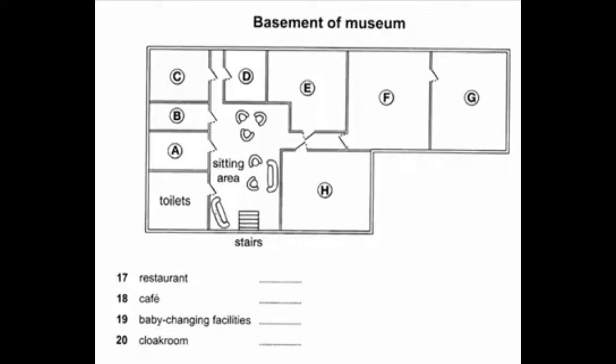If you just want a snack or if you'd like to eat somewhere with facilities for children, we also have a cafe. When you reach the bottom of the stairs, you'll need to go straight ahead, turn right into the corridor, and the cafe is immediately on the right.